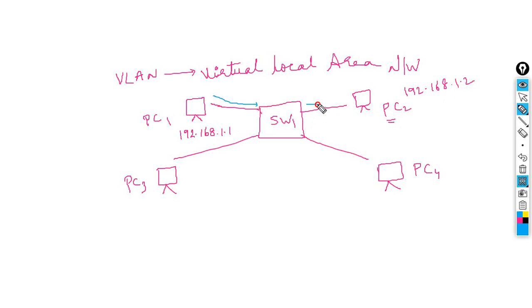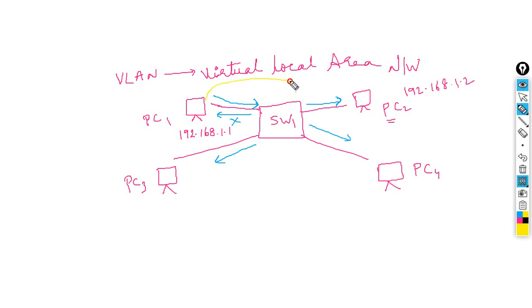The switch sends the frame out on all ports except the one it received it from. After receiving a reply, it learns the MAC address and stores it in the MAC table. From then on, communication proceeds normally. However, this creates a single broadcast domain for all devices.